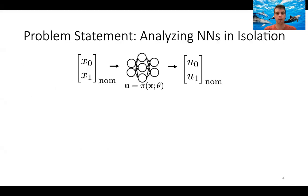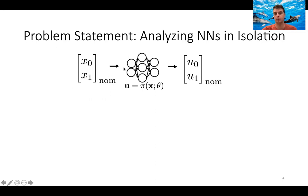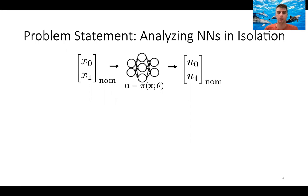Let's talk about a problem statement for analyzing a neural network in isolation. In a controls context, you may have a controller that has been learned with weights embedded in a neural network. For instance, your state vector might have two components, X0 and X1, which get passed into the neural network, which outputs the control effort for two different components of your system. That's a classic use of a neural network control policy — it works well when you have a nominal measurement and want to find the action your system should apply.